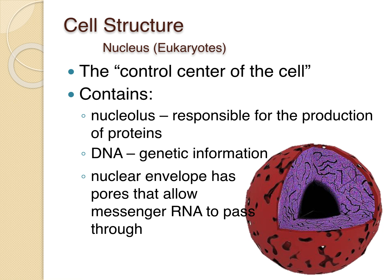The nucleus in eukaryotic cells is the control center — that's where all the instructions come from. It contains a nucleolus, which is responsible for production of proteins. The nucleus also contains DNA in the form of nucleic acids, and it has a nuclear envelope with pores to allow RNA to pass through. The nucleolus is the dark center, the chromatin/DNA is in the surrounding region, and the nuclear envelope is the outer layer with holes for messages to pass in and out.